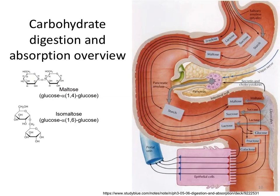What happens when we eat a meal containing carbohydrates? First, the salivary glands in the mouth secrete an enzyme called amylase, which begins breaking down starch. However, this is only significant if we chew our food for a long time. Those who wolf down their food will have starch enter the stomach mostly undigested. So starch, sucrose, lactose, and breakdown products of starch called maltose enter the stomach, and not much happens to them there.